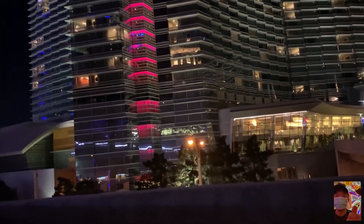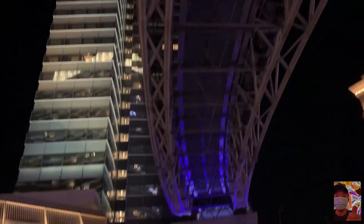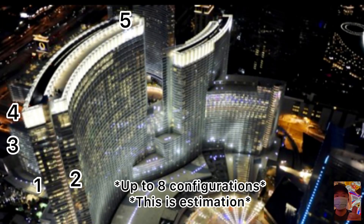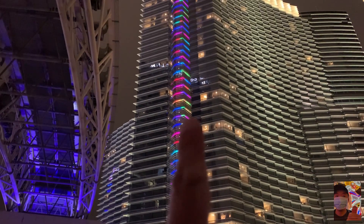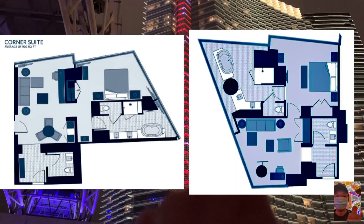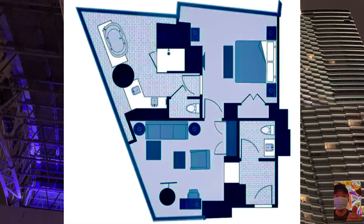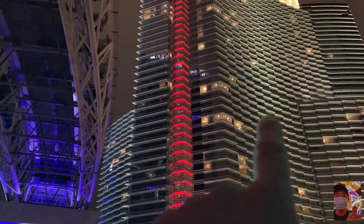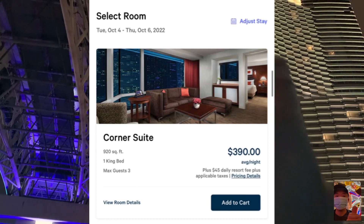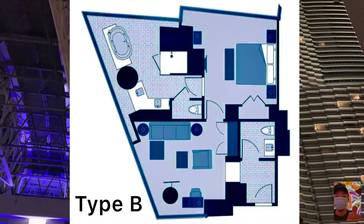Here I'm down on ground floor near the Vidara towers, right below the tram. Technically, there are up to eight different configurations for these corner suites, and the tricky part is they're all named the same: corner suites. These eight different configurations branch out of two different main floor plans, and that's all we need to focus on for now. For the sake of this video, we'll differentiate the two room types by calling them room type A and room type B.